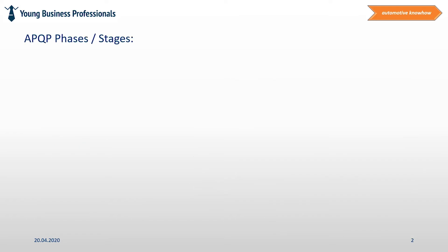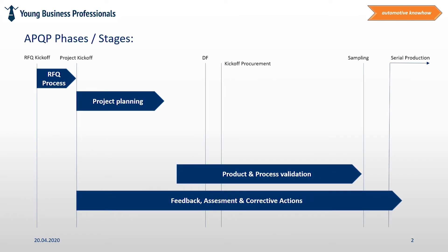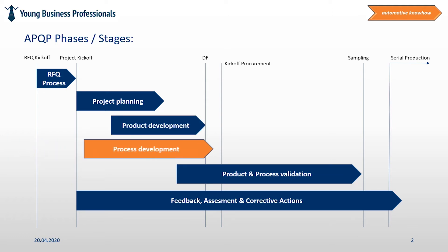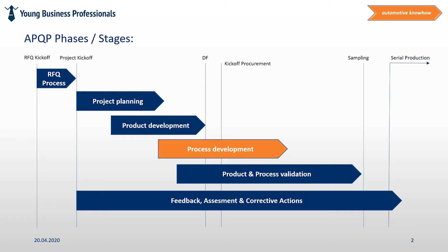What is the scope of the process development phase? In this part of the project the future production process for the product is being developed. In addition, the planned equipment is being procured and approved. This phase is starting already in parallel to the product development phase and may start theoretically from the moment at which the product design can be foreseen roughly.